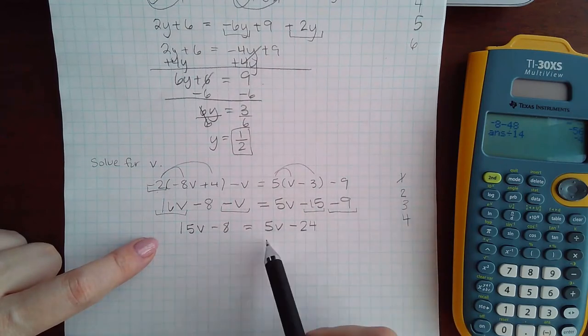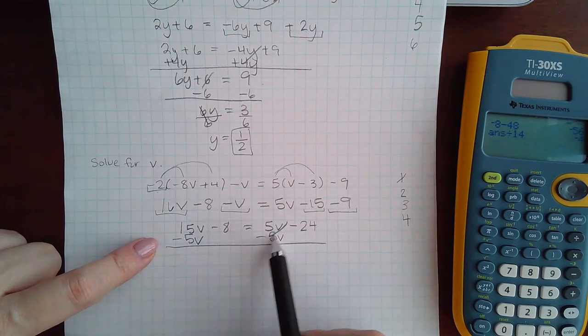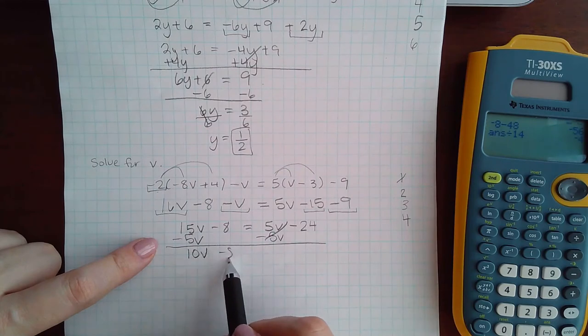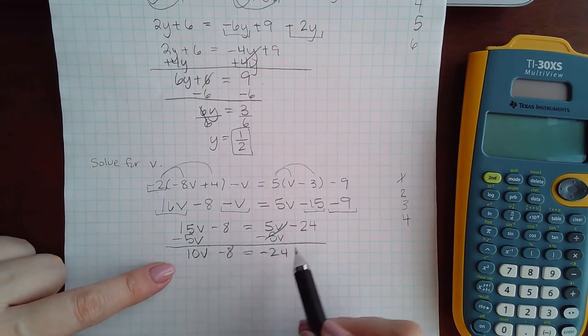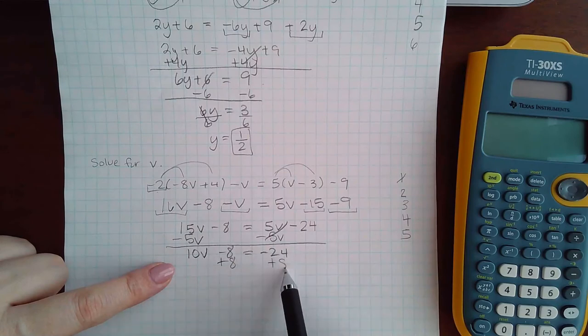Step four is to move the variables to one side. Step five is to move the constants to one side or the other side.